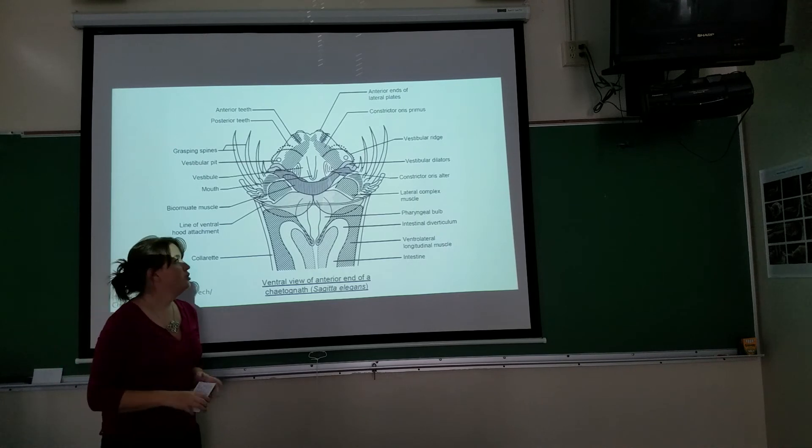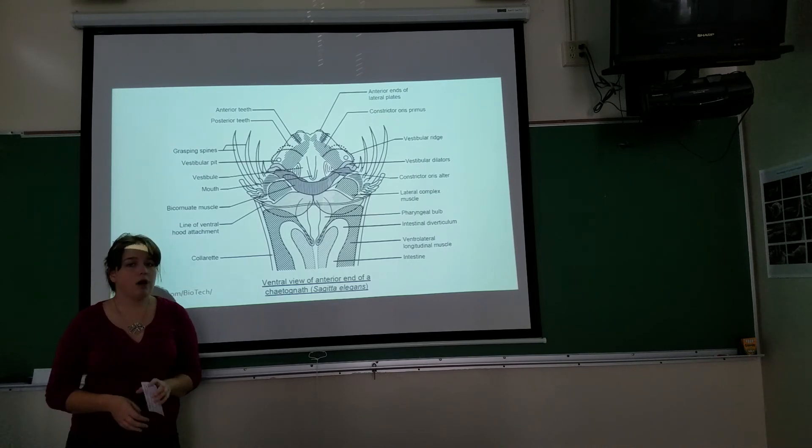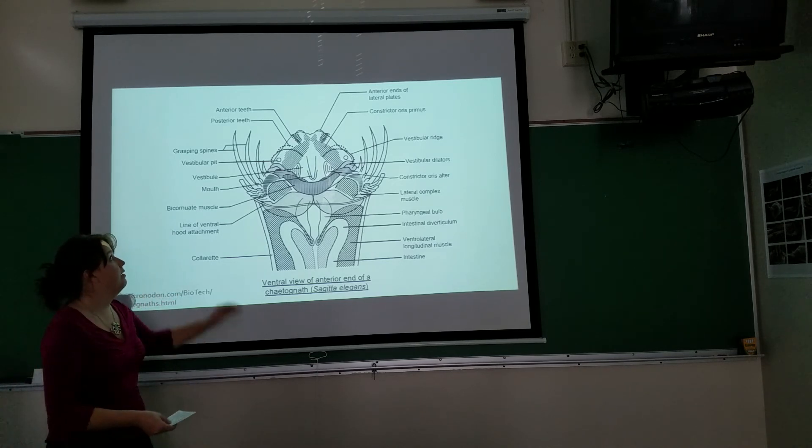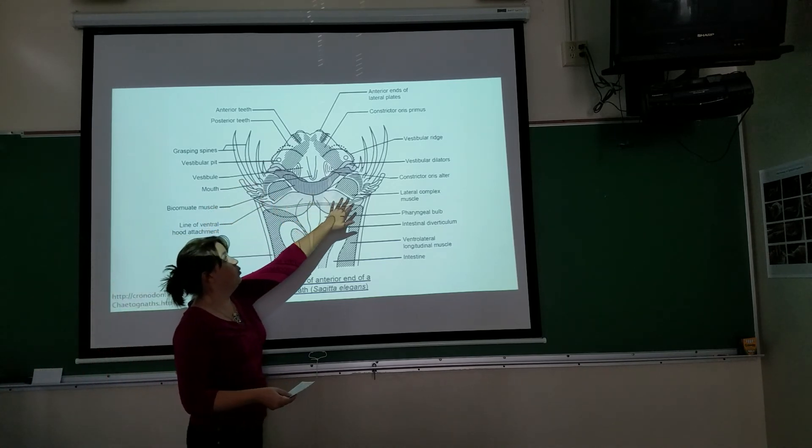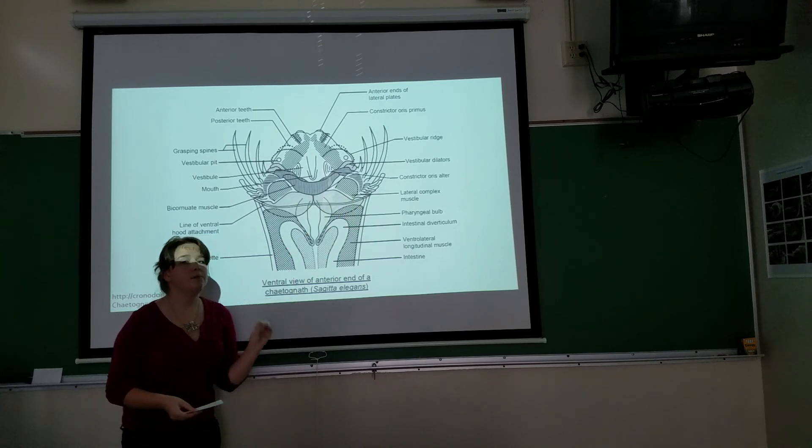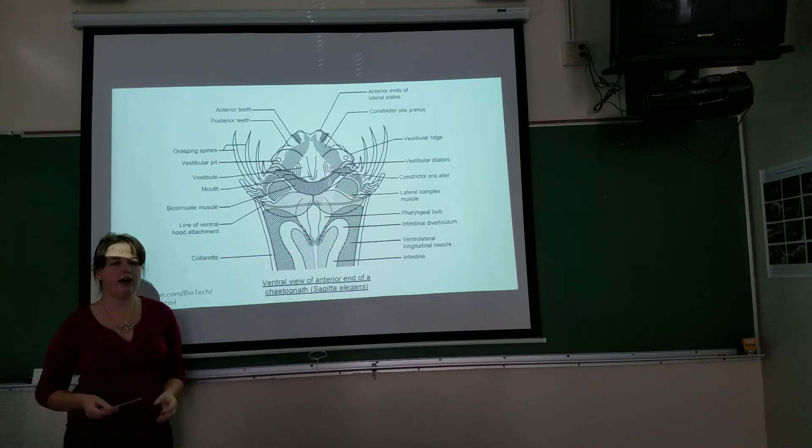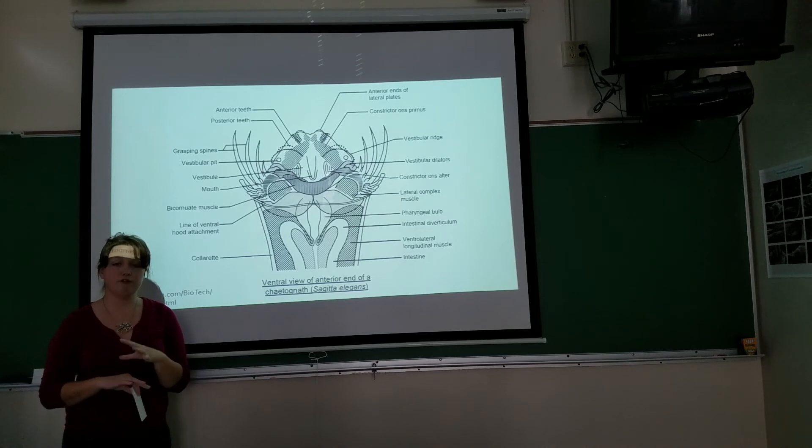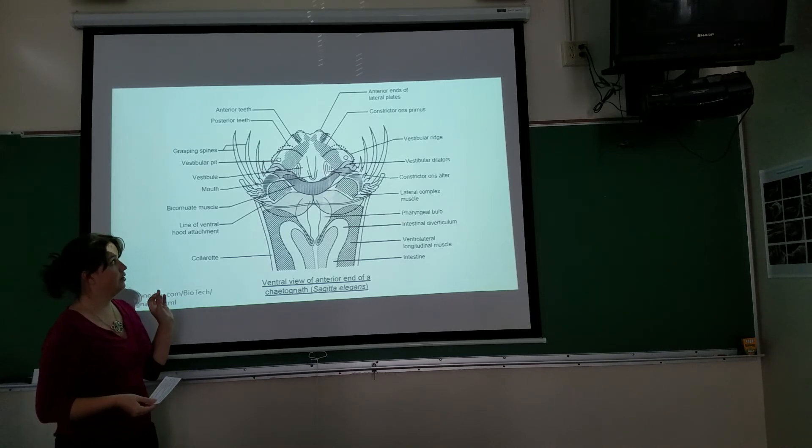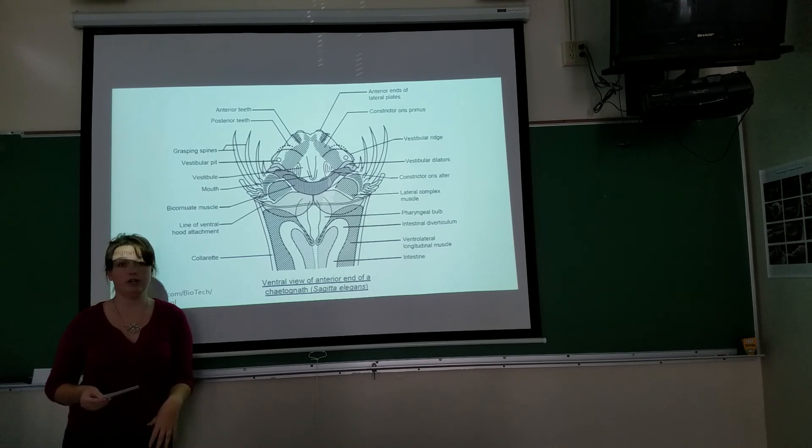What's most unique about a Chaetognath is probably its head morphology. Chaetognaths have these spines, which can all be manipulated individually. And that allows for a great maneuvering and manipulation of prey near the mouth. They can also be covered by a retractable hood when necessary.